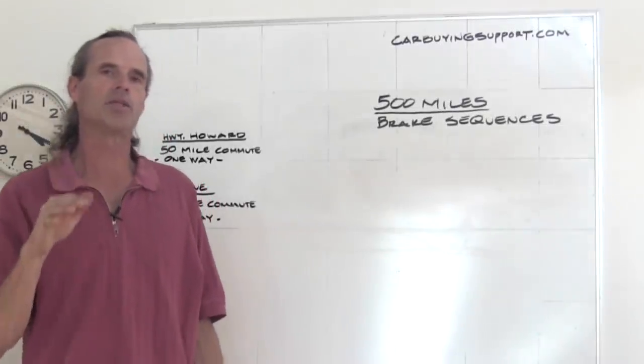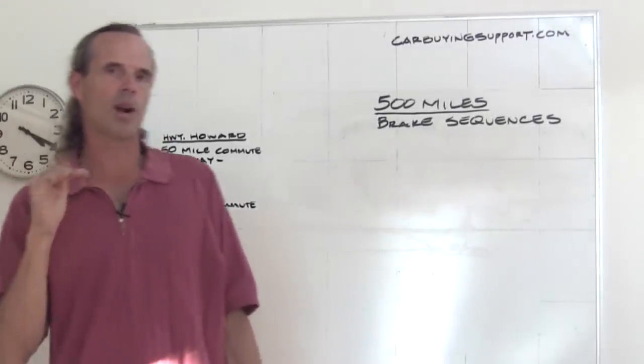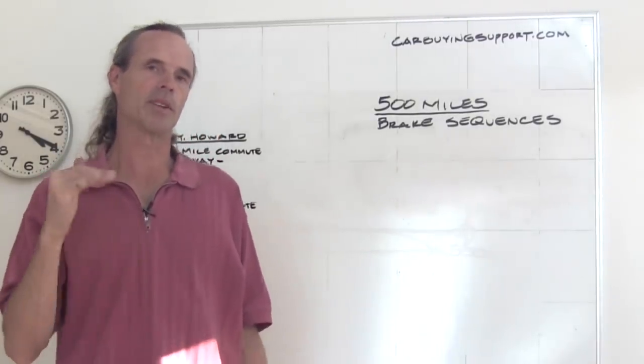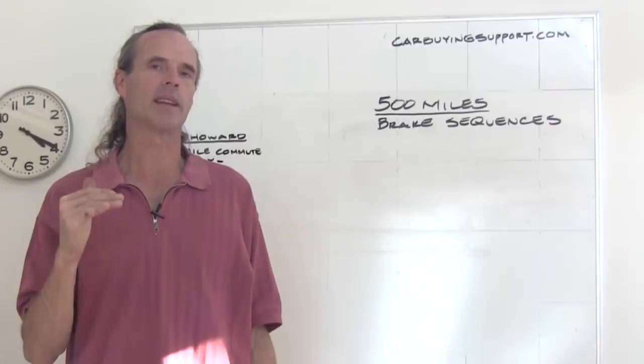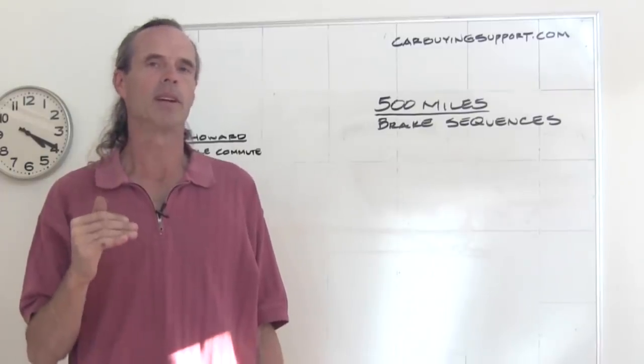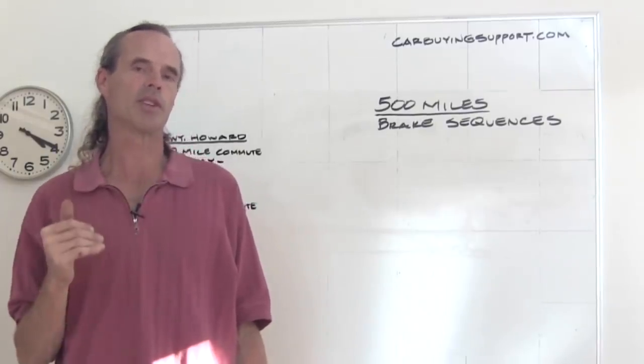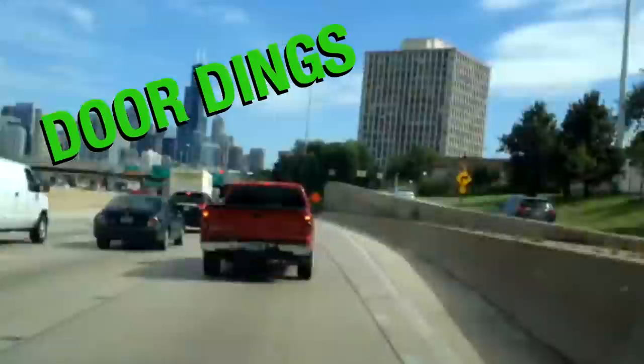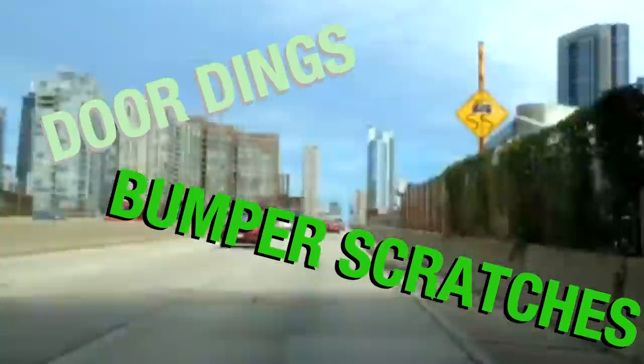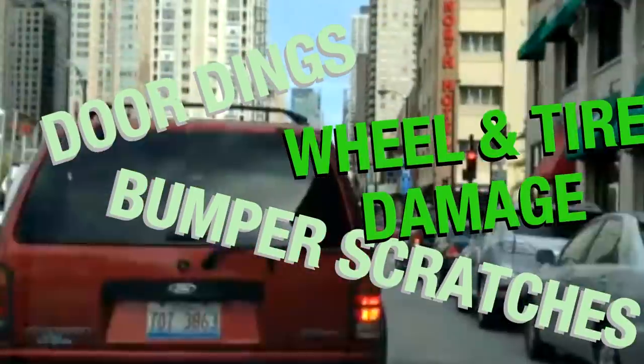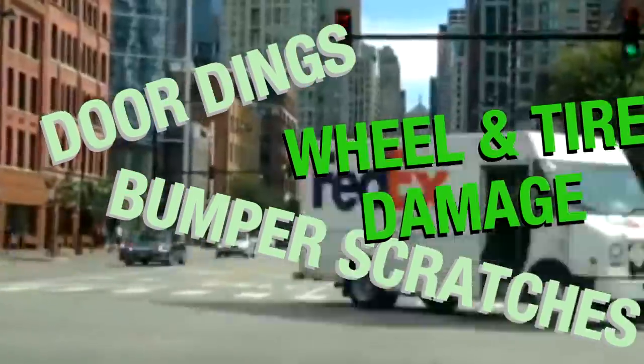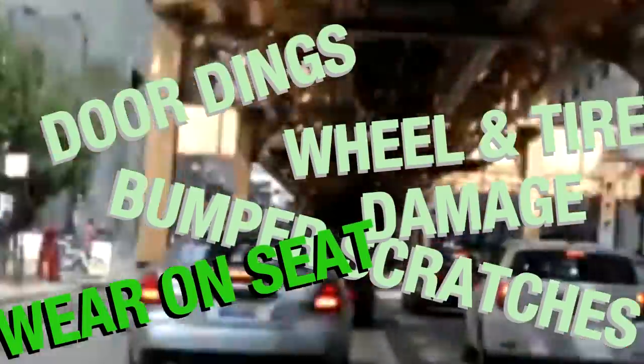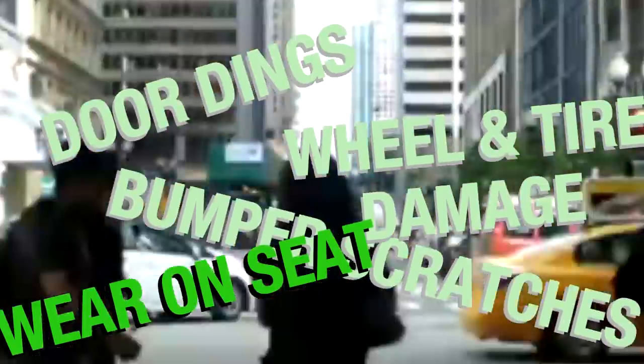Now, finally, City Sue's car is going to have problems with the engine, transmission, and the exhaust. But there's also other things that you might not think about when comparing a highway-driven car to a city-driven car, and that includes more door dings, bumper scratches. There will be lots of wheel and tire damage from hitting curbs. You're going to have additional wear on the seat, because she's going to get in and out of the seat a lot more, in fact, ten times as much as Highway Howard.